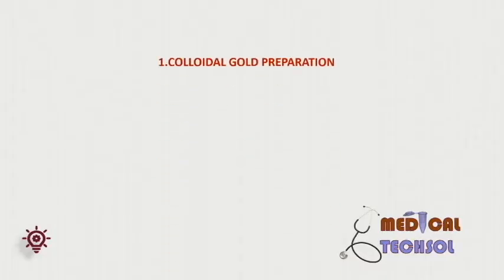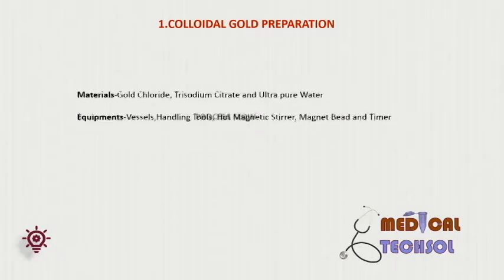Gold Preparation — general method. Reagents used are gold chloride, trisodium citrate, and ultrapure water. Equipment required are a container or vessel, a tool for handling hot containers, a magnetic stirrer with heater, a magnetic bead, and a stopwatch or timer.